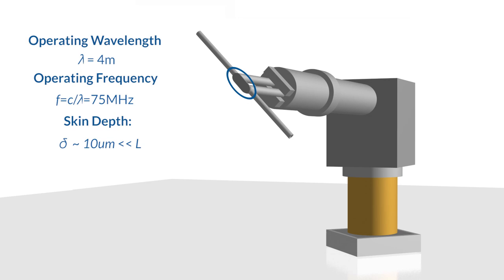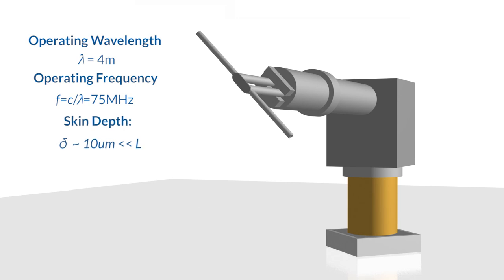These are the key things to keep track of before starting any modeling: where is the structure being fed, what is the operating wavelength, what is the operating frequency, and what is the skin depth of the materials in the model. Once we've assembled this information, let's look at what a typical model would look like schematically.